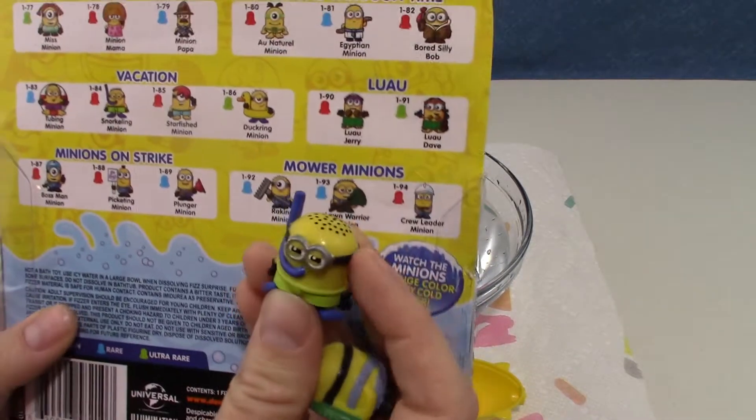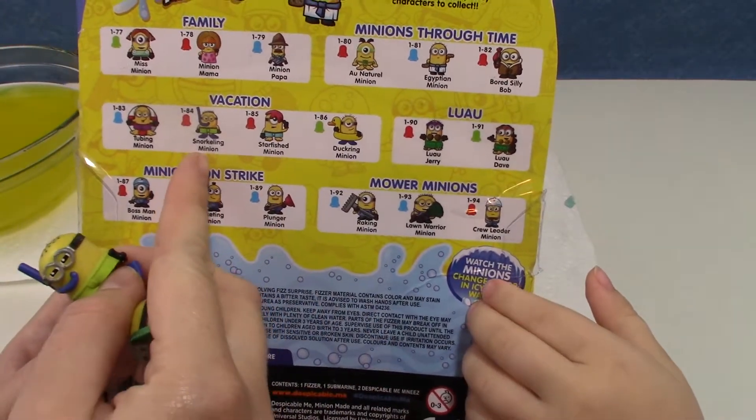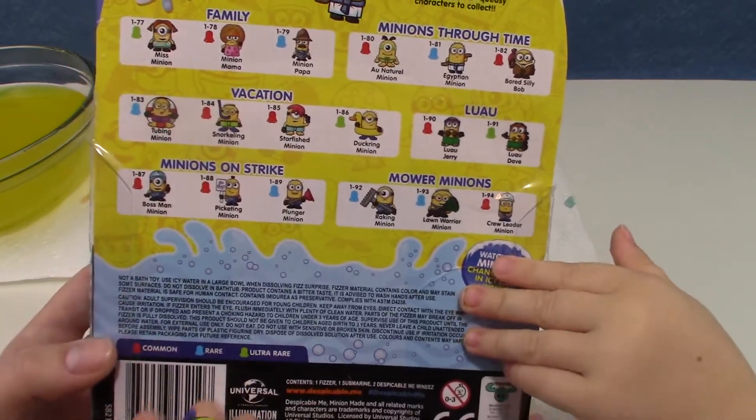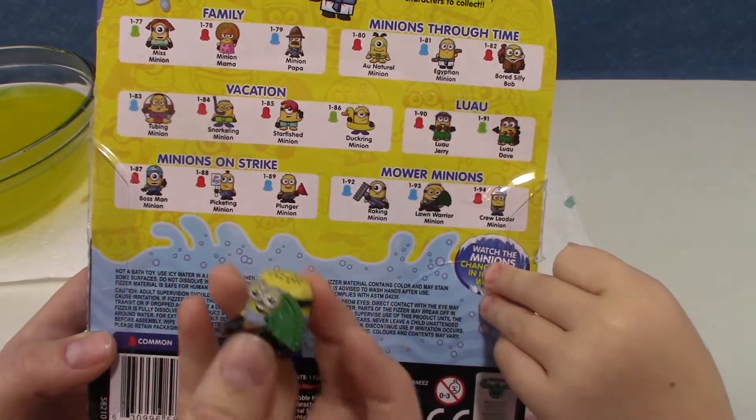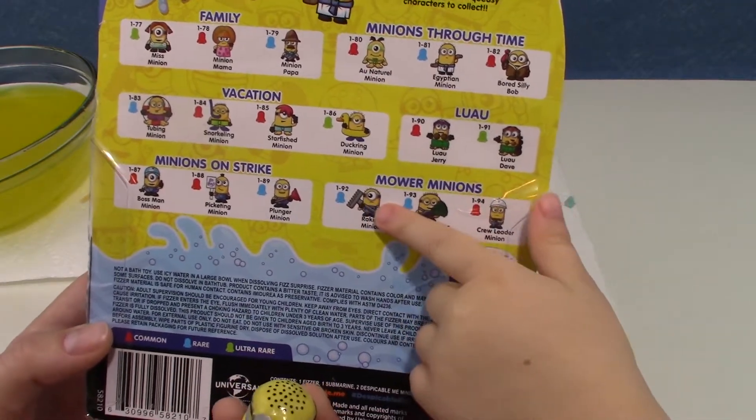Let's see, where is he at? Snorkeling minion, he's a common, and then this one with the rake, lawn warrior minion is a rare. We got that one.